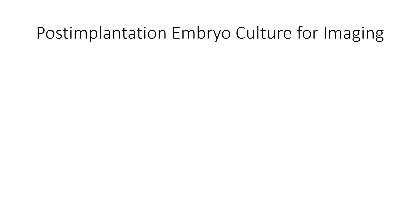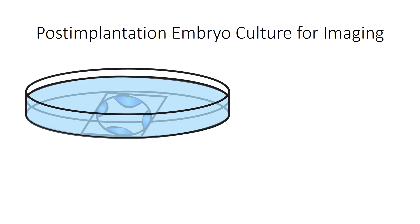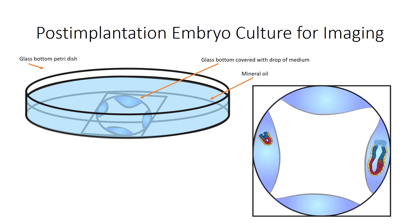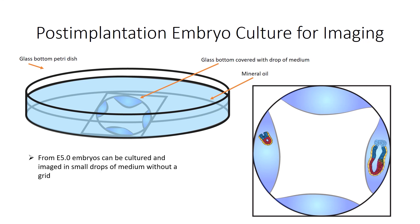If we want to culture post-implantation embryos, we also use media drops covered with mineral oil. But since post-implantation embryos are not fully circular, culture grids are not required. Instead, they are cultured in small drops.